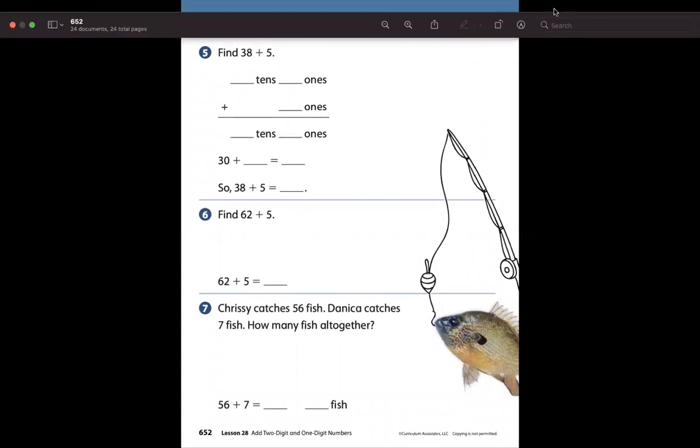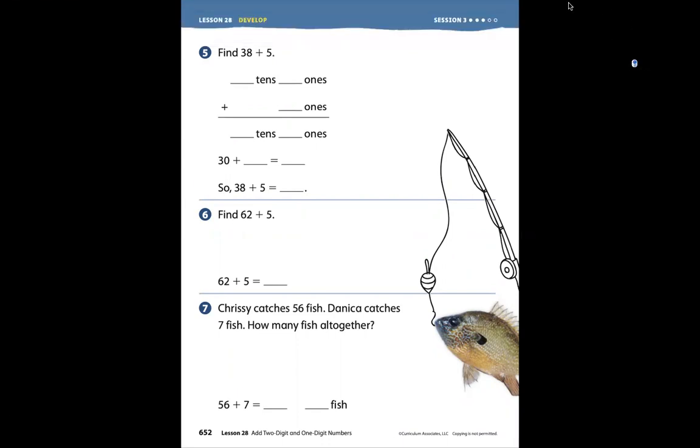In the number 38, we can see that we have tens and we have ones. So you can draw your t-chart right down the middle. We have tens and ones. And with the number 5, we only have ones. So we can transfer that information down here into the tens and ones.